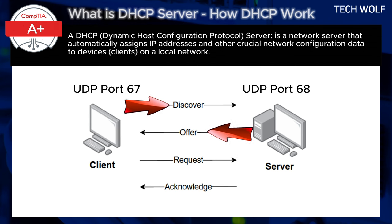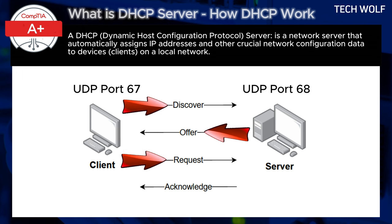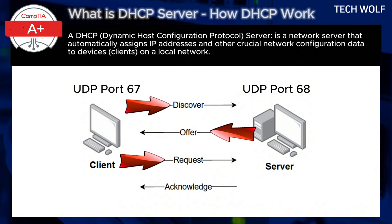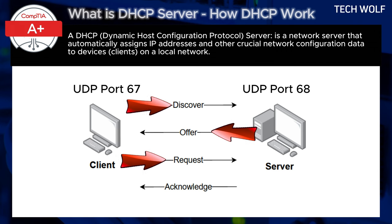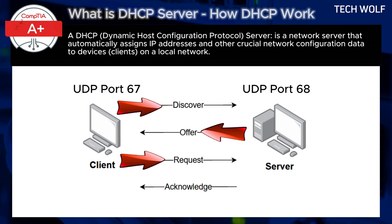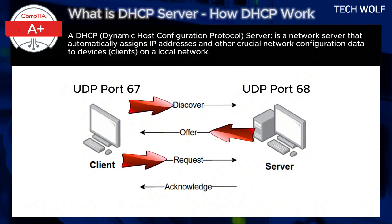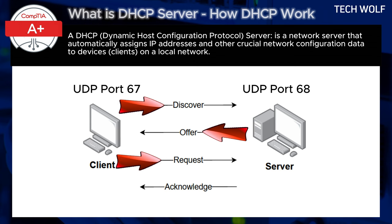The next step is DHCP Request, client to server on UDP port 67. After receiving an offer, the client responds with a DHCP Request packet to confirm acceptance of the provided IP address. The DHCP Request is again sent as a broadcast, allowing multiple DHCP servers on the network to recognize which IP address the client has chosen. This message also uses UDP port 67, ensuring that any DHCP server that responded to the initial Discover can acknowledge the request.